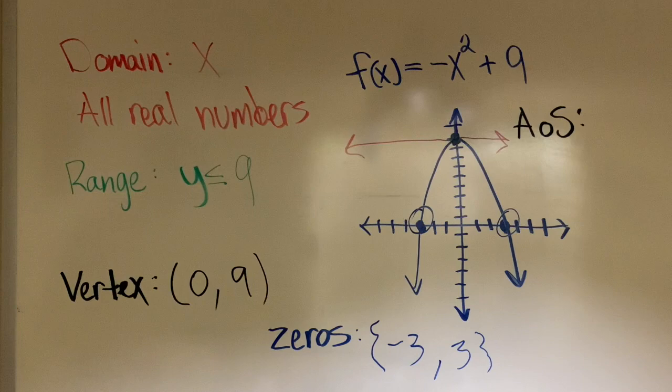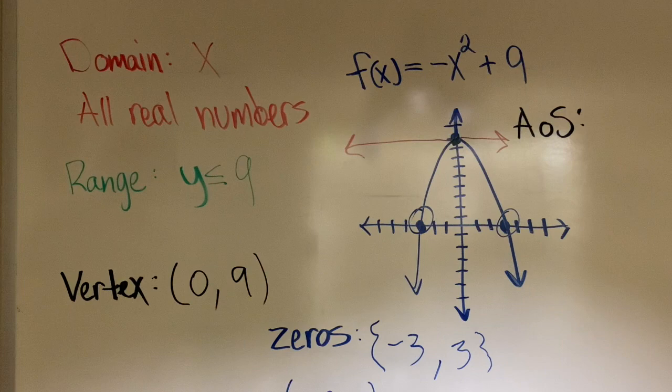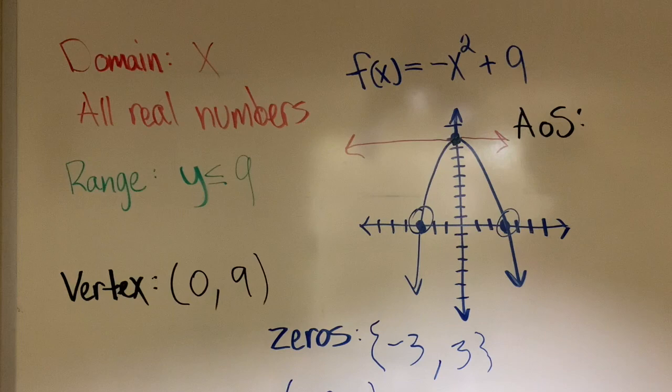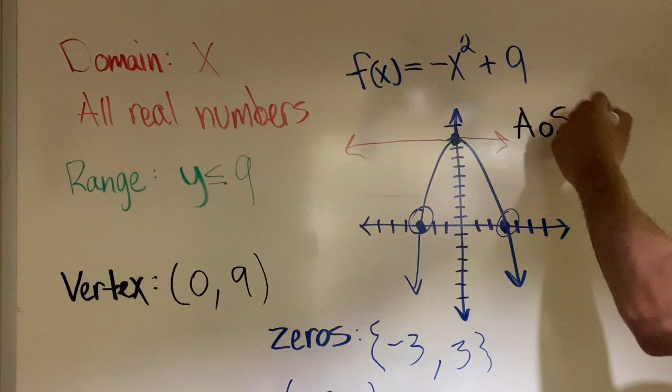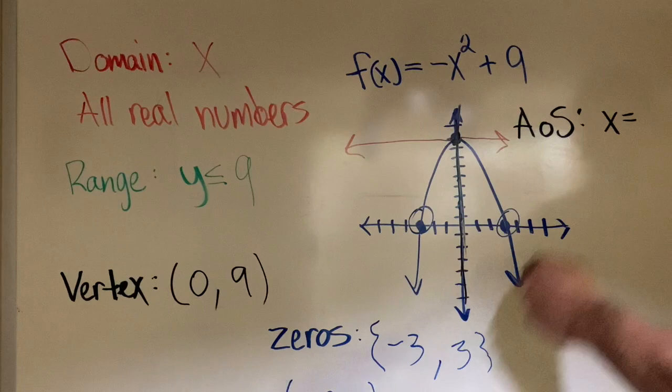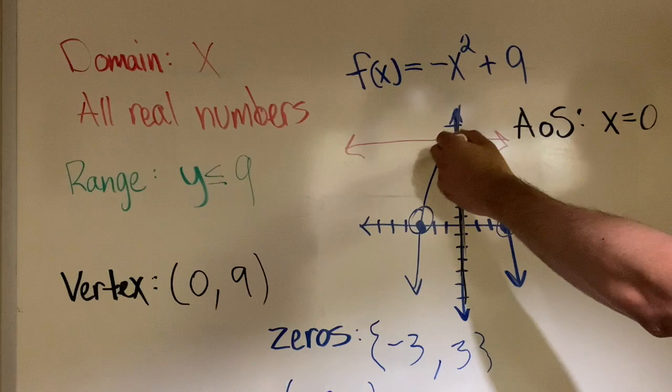And lastly, the axis of symmetry. The axis of symmetry is the line that cuts the parabola in half, and it is a vertical line. So because it is a vertical line, the axis of symmetry will start with x equals. Well, let's see. If I draw the vertical line right there, it's going through when x is 0. And as you can see, it is also the x value of the vertex.